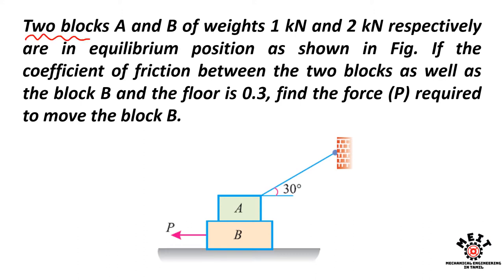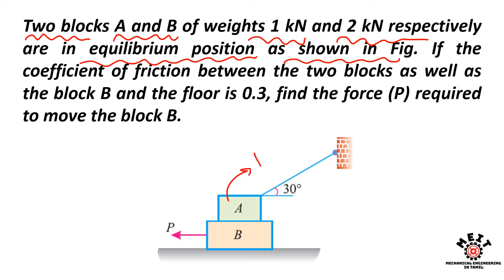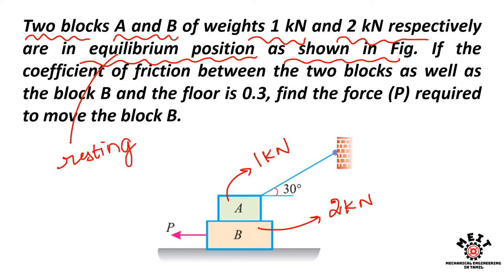Two blocks A and B, weighing 1 kN and 2 kN respectively, are in equilibrium position as shown. Block A has a weight of 1 kN and block B has a weight of 2 kN. Both are in equilibrium — that is, resting condition. The coefficient of friction between the two blocks as well as between block B and the floor is equal to 0.3.